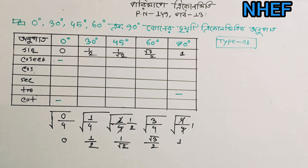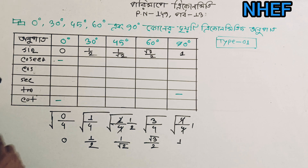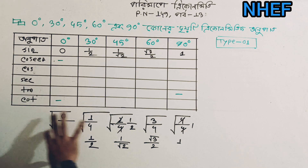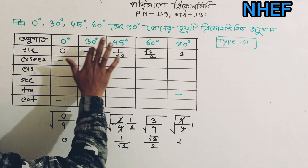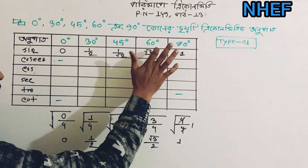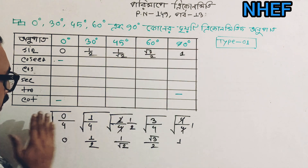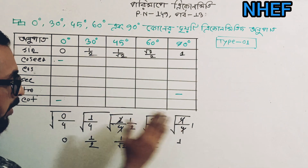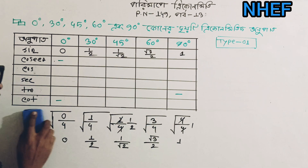Sin 60 degree is √3 divided by 2, and sin 90 degree is 1. So the sine values for 0, 30, 45, 60, 90 degrees — this formula is done with the table.